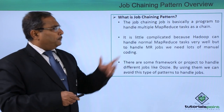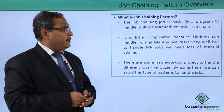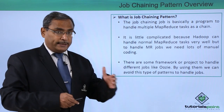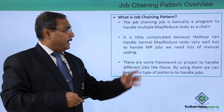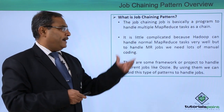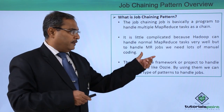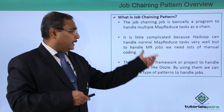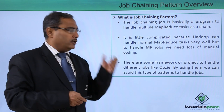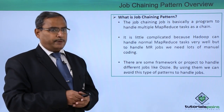The job chaining pattern is basically a program to handle multiple MapReduce tasks, and they will get executed in a chain. It is a little complicated because Hadoop can handle normal MapReduce tasks very well, but to handle chained MapReduce jobs, we need lots of manual coding in the case of Hadoop.